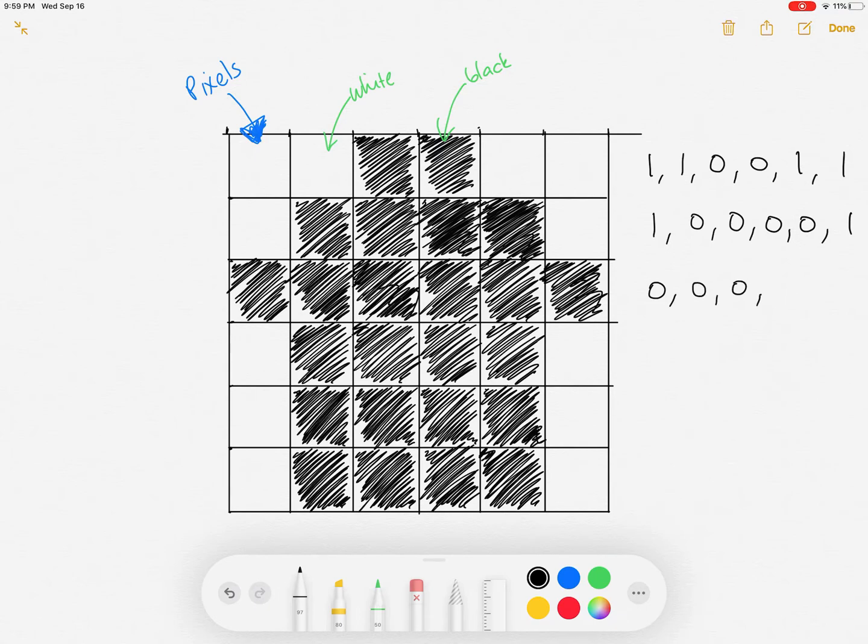So the row below be all zeros there we go. And then the row below would be one, zero, zero, zero, zero, one, just making sure I get it right.